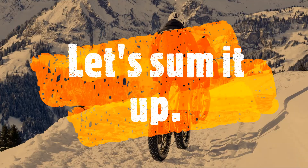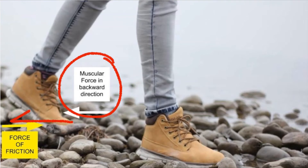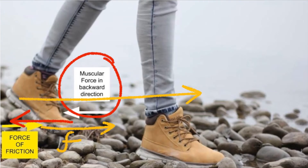Let's sum it up with an example. When we walk, we apply a muscular force in the backward direction. This is a relative motion between the person and the ground. This causes a reaction force and a frictional force in the forward direction, which propels us forward.